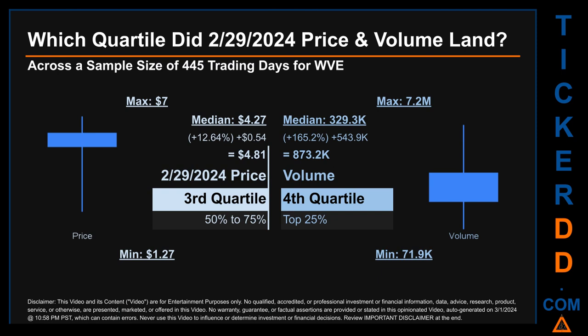Hello, my name is Maria. Which quartile did February 29, 2024 price and volume land in, across a sample size of 445 trading days? The maximum end-of-day price for WVE was $7.00 while the minimum was $1.27. February 29, 2024's price of $4.81 landed within the third quartile, placing it within the 50–75% range of all sampled end-of-day prices. The day's volume landed within the fourth quartile, marking it within the top 25% of all sampled daily volume.